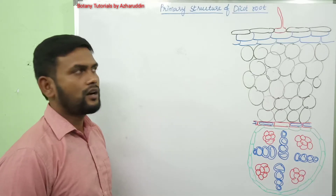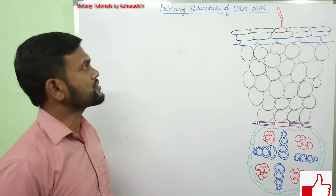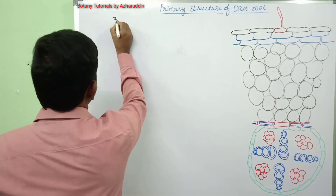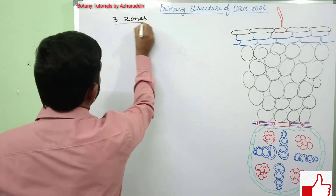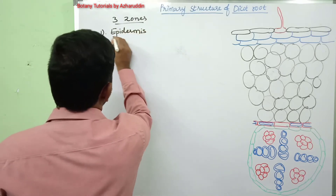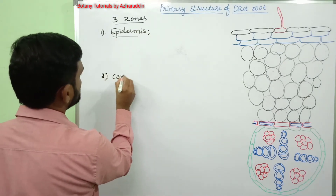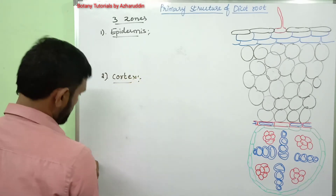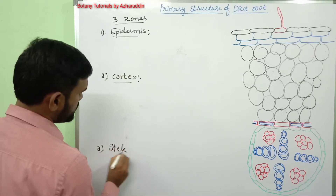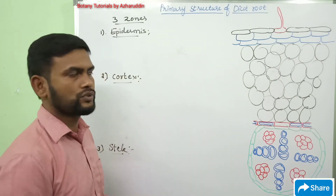In this session I will start another topic: the primary structure of dicot root. The primary structure of dicot root shows mainly three zones. They are: number one, epidermis; second zone is called cortex; and third zone is called vascular bundle or stele. These three zones are seen in the transverse section of primary dicot root.